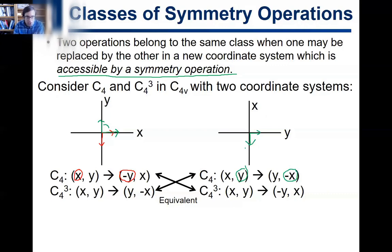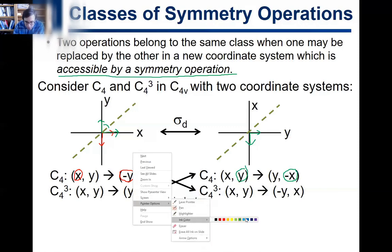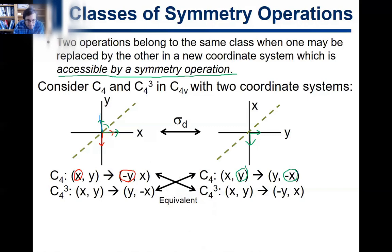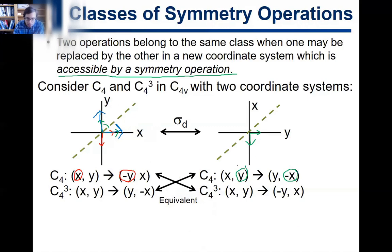We have to be able to convert from the original coordinate system to the alternate one using a symmetry element in the point group. That symmetry element is sigma-d — the diagonal mirror plane. A diagonal mirror plane takes a Y vector and flips it to X, and takes an X vector to Y. So Y → X and X → Y, which is exactly the interconversion between the two coordinate systems.